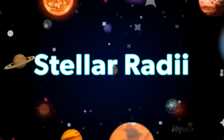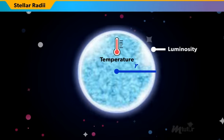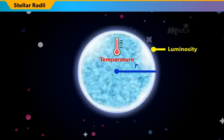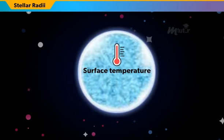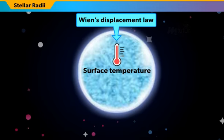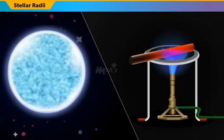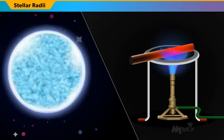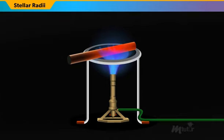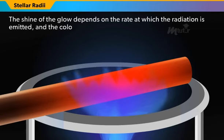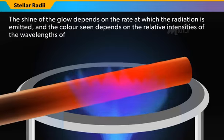To find the stellar radii of a star, we must know the luminosity and surface temperature of the particular star. The surface temperature of the star can be calculated using Wien's Displacement Law of Blackbody Radiation. Stars emit in much the same way as blackbody emitters, so we can make inferences about stars using the theory of blackbody radiators. When a blackbody is heated, it emits energy to its surroundings as electromagnetic radiation. The shine of the glow depends on the rate at which it radiates, and the color seen is based on the relative intensities of the wavelengths of the emitted radiation.